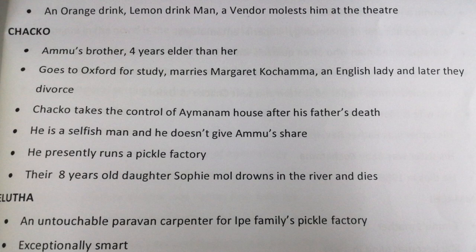Next character: Chacko. He is Ammu's brother, four years elder than her. He goes to Oxford for study, marries Margaret Kochamma, an English lady, and later they divorce. Chacko takes control of the Aymanam house after his father's death. He is a selfish man and doesn't give Ammu her share. He runs a pickle factory. Their eight-year-old daughter Sophie Mol drowns in the river and dies.